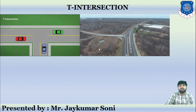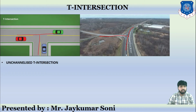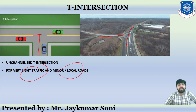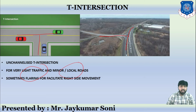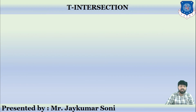There is a type of intersection called the T intersection. Its shape resembles the letter T. Here, no traffic control measures are provided, so it is called an un-channelized T intersection. It is only provided where very light traffic is present or on very local or minor category roads. Sometimes flaring is also provided to facilitate right-side movement, and sometimes islands are also provided.